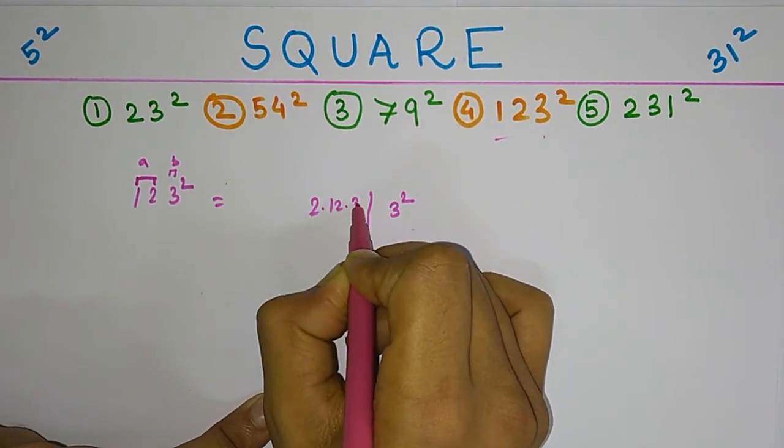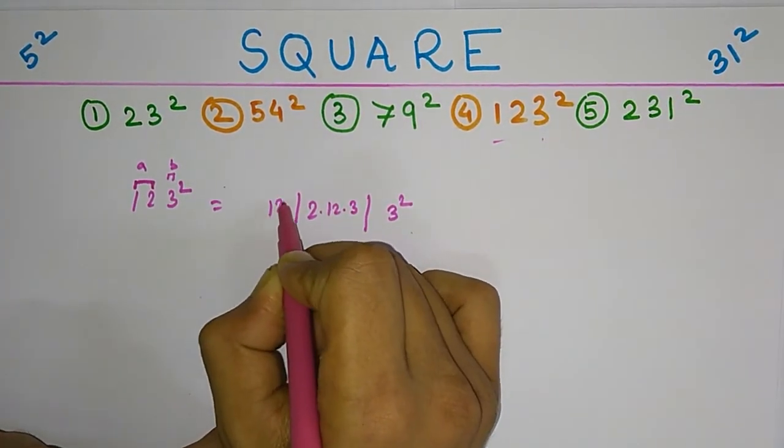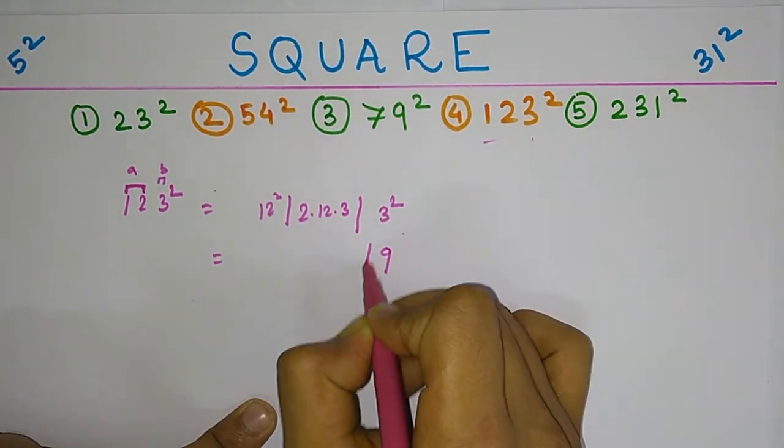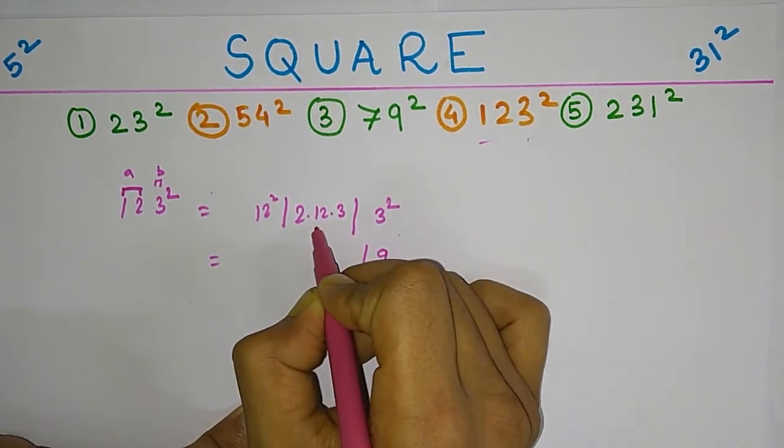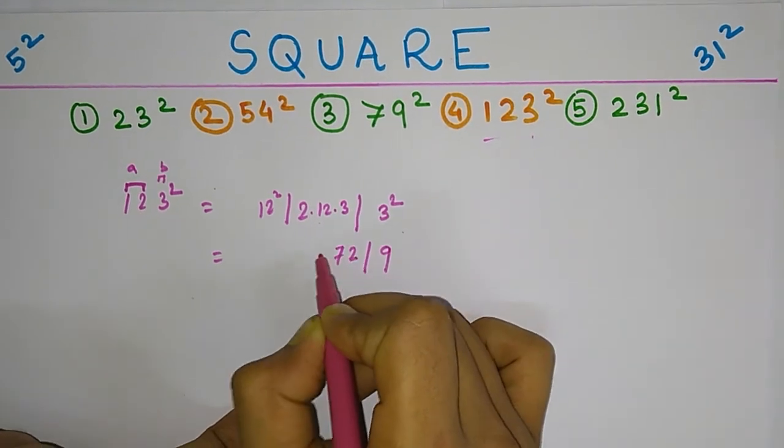So according to our formula, it becomes 3 square, 2 into 12 into 3, and 12 square. Now 3 square is 9, 2 times 3 is 6, 12 is 72, and 12 square is 144.